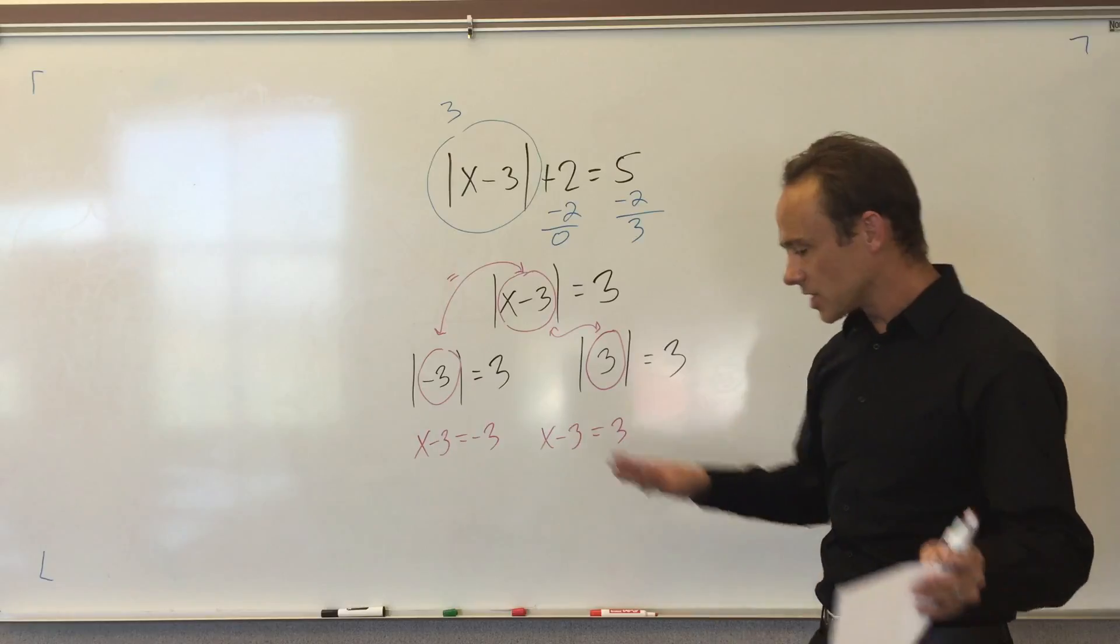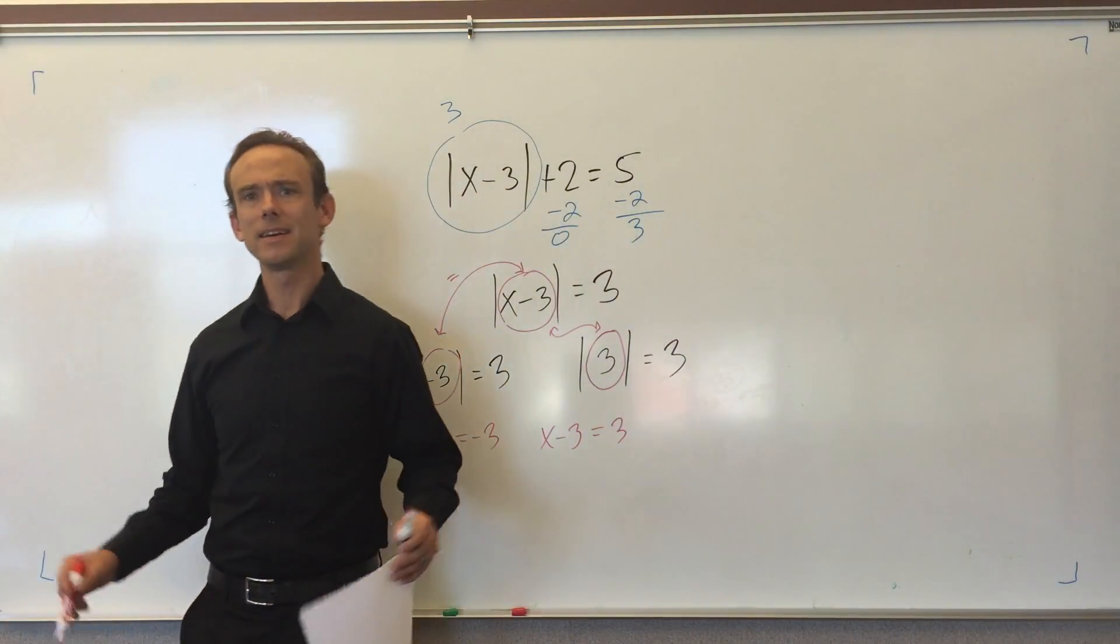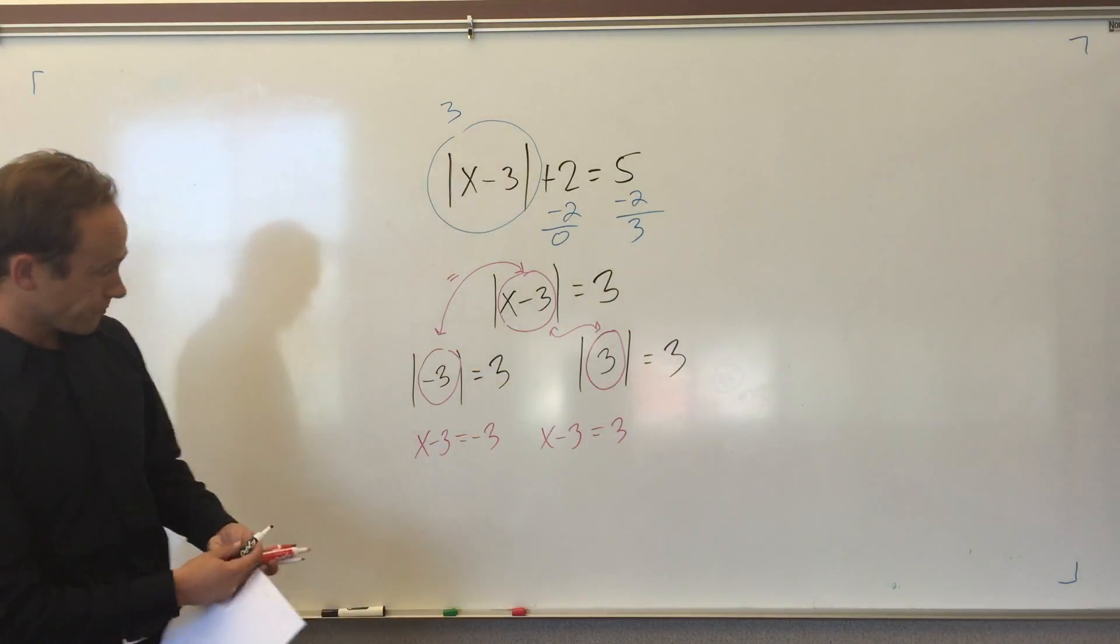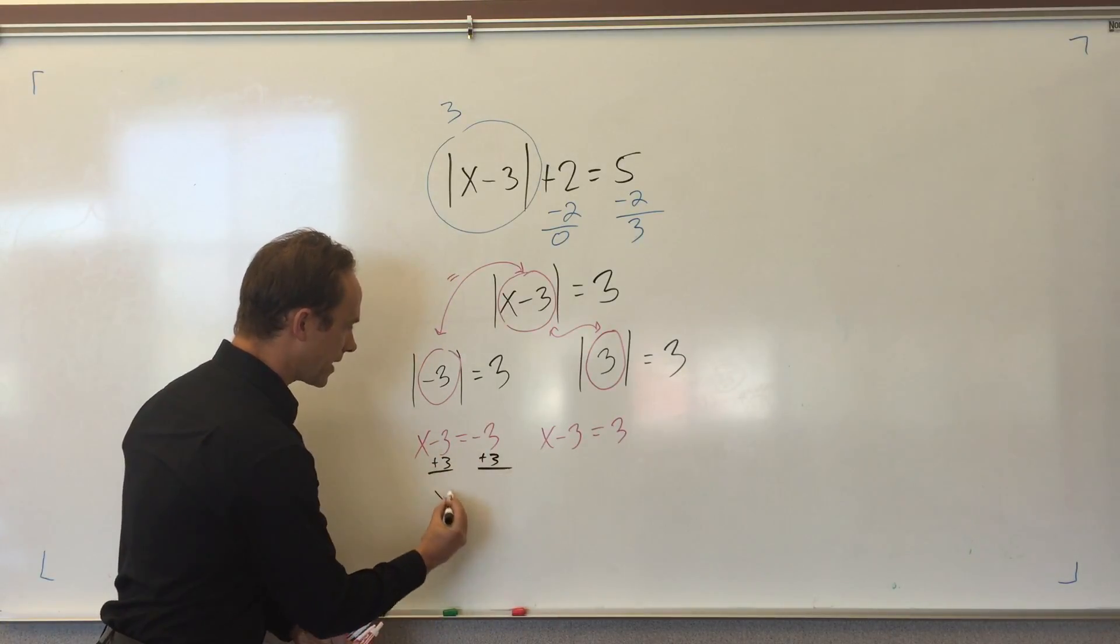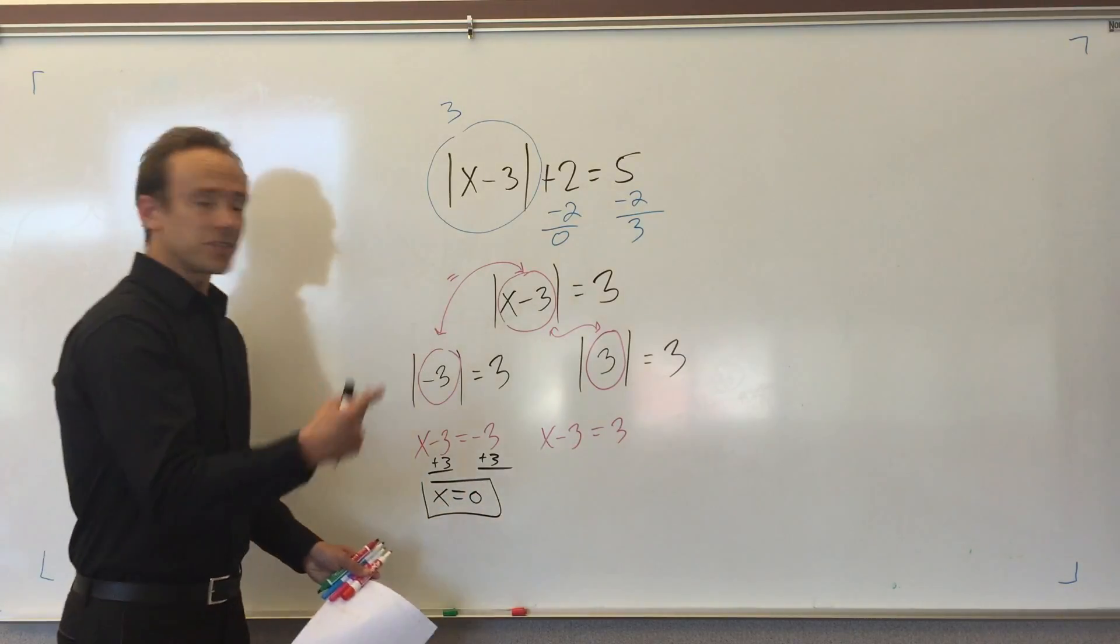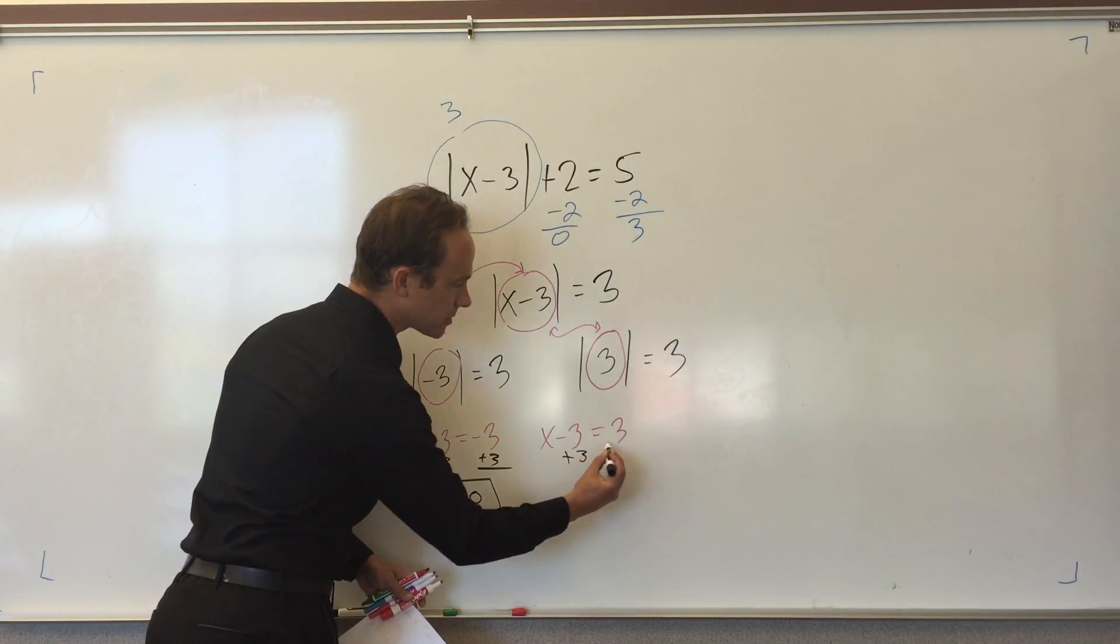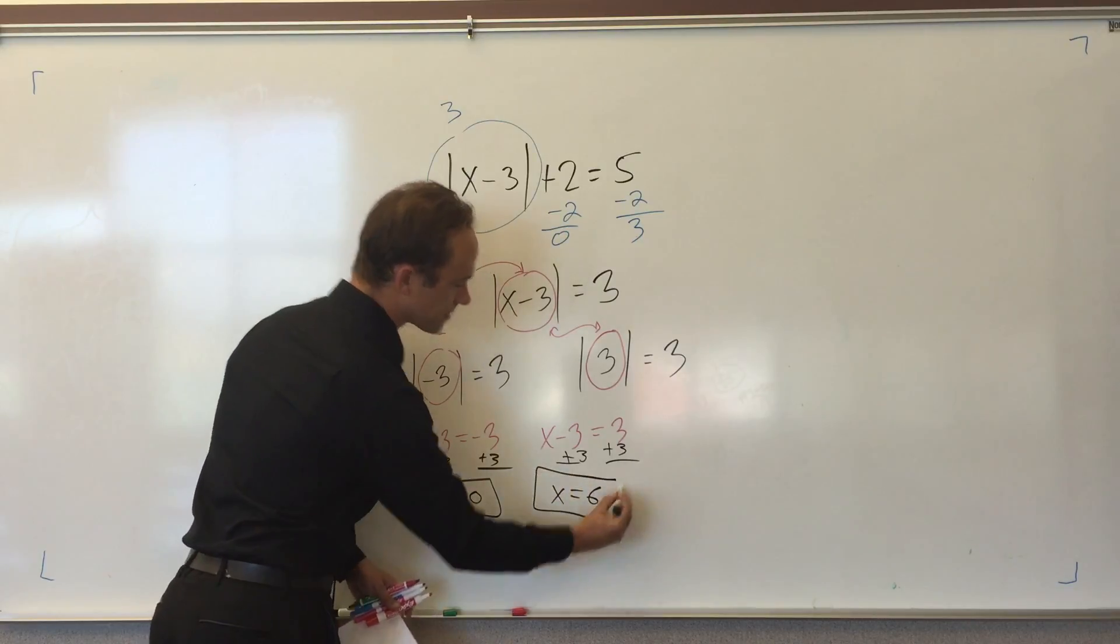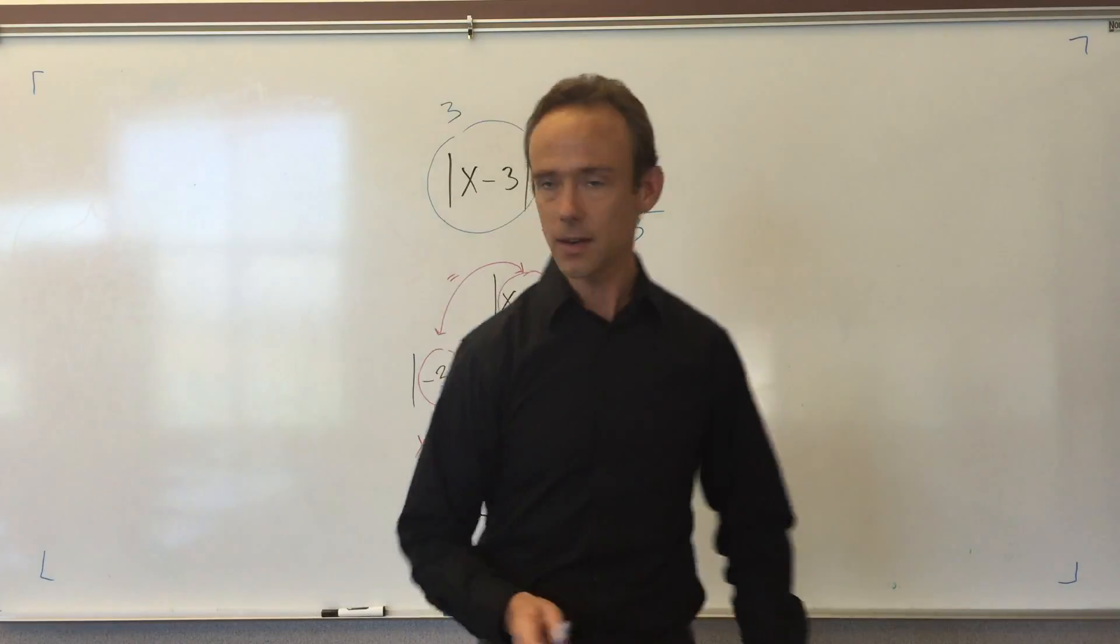We're almost there. I feel like I'm on this side of the board too much. Let me go to that side. What I'm going to do now is solve for x. I'm going to add 3 to both sides. I got x is equal to 0. Over here I'm going to add 3 to both sides, and I get x is equal to 6. Those are my two answers.